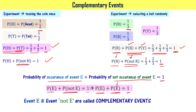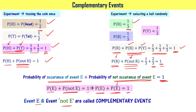If one probability is 0.8, the other is 0.2. If one is 0.5, the other is 0.5. If one is 1/3, the other is 2/3. P(E) + P(Ē) = 1 — these are complementary events. Red and not-red are complementary events. Getting red and not getting red are complementary events. Getting head and not getting head — or equivalently getting head and getting tail — are complementary events because their probabilities sum to 1.